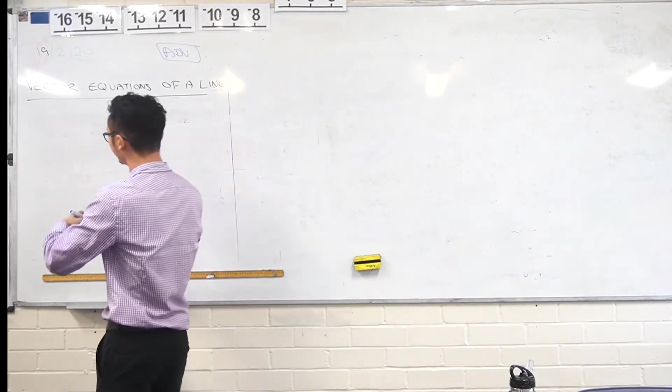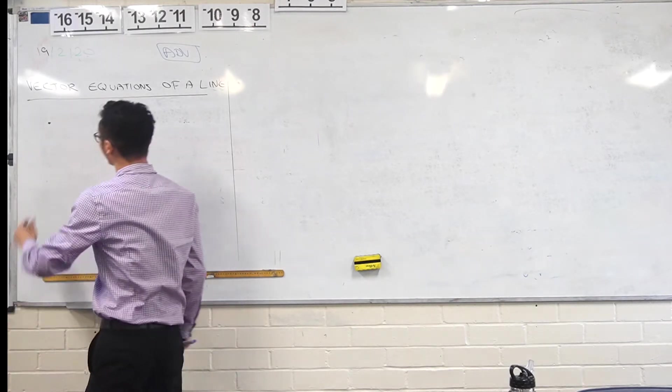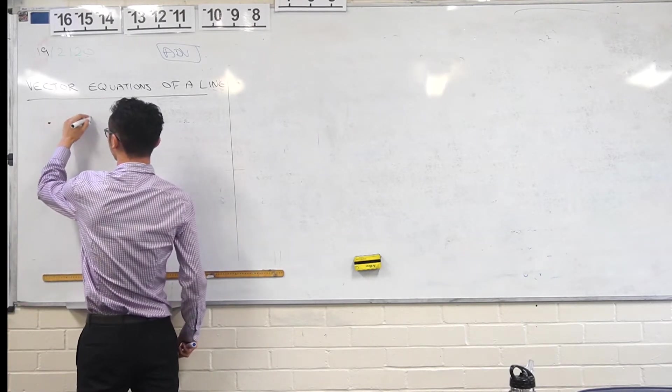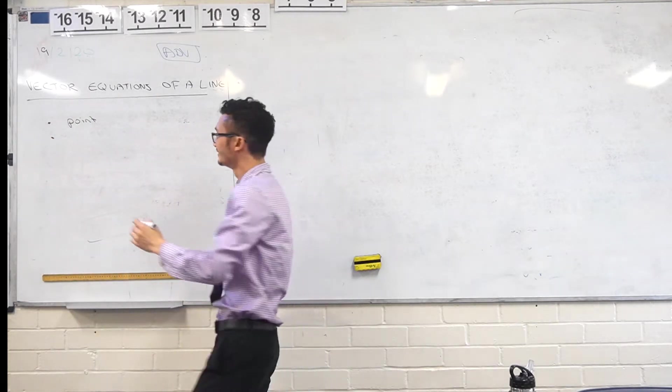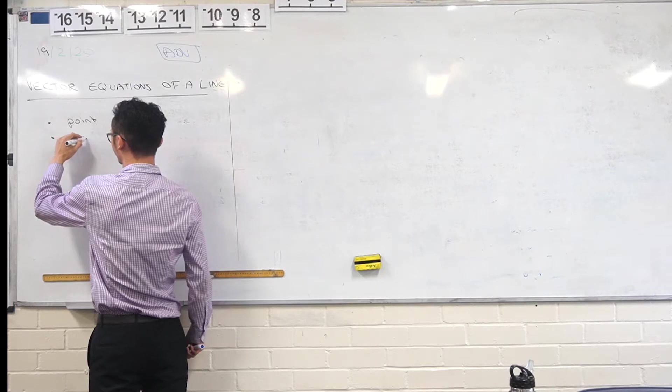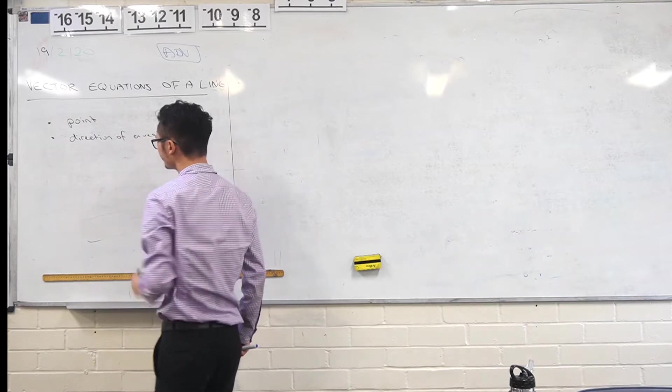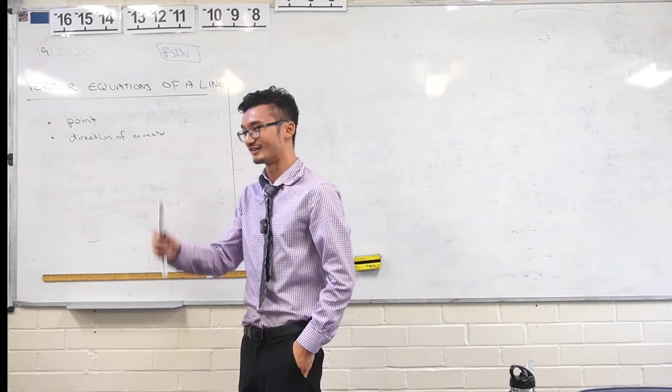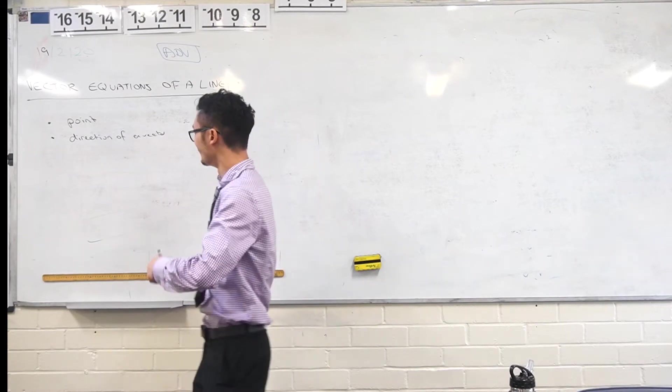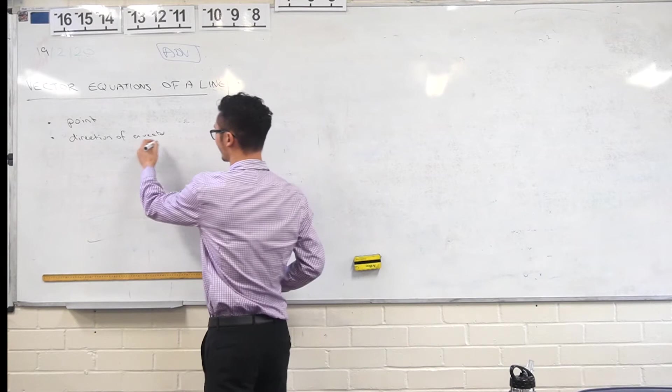We needed a lambda of A. There is a lambda involved. So we needed a point, and we didn't need a gradient this time, we needed a direction of a vector. Or another vector, essentially, right? So the arg would give you the two-dimensional space, right? So what's the direction of a vector? Essentially, the direction of a vector in the 3D space is just another vector.